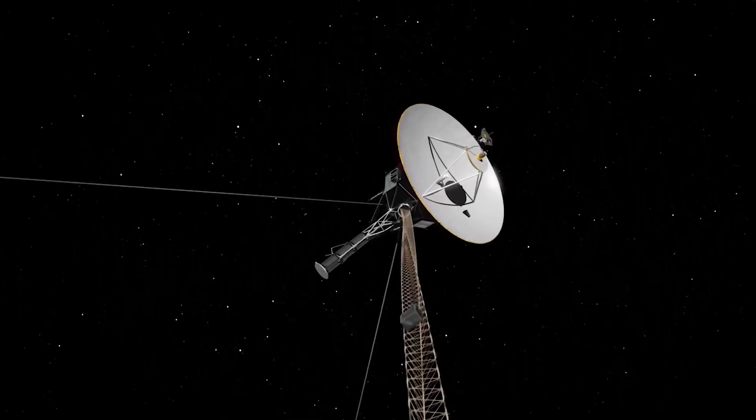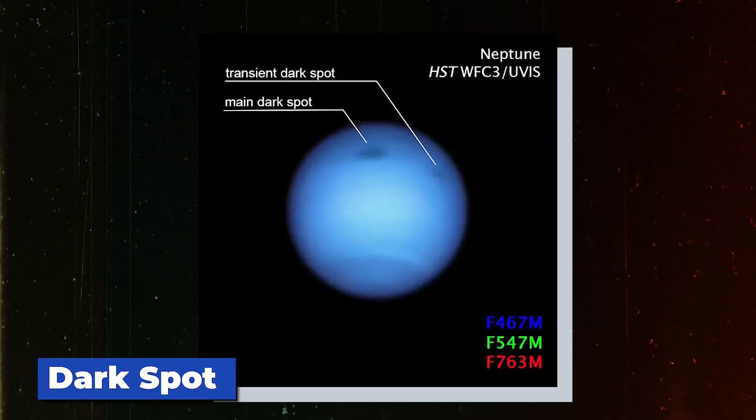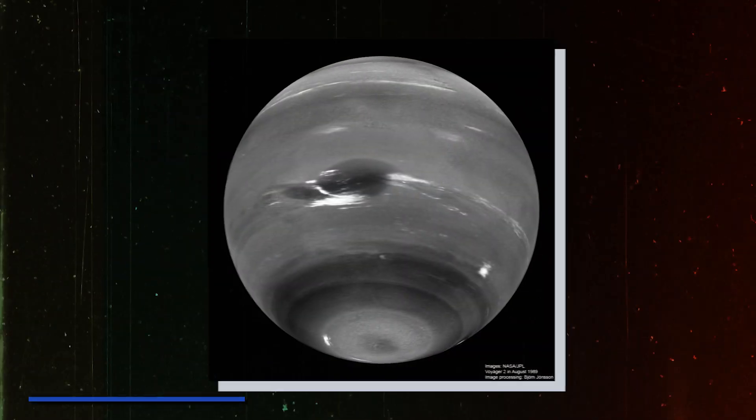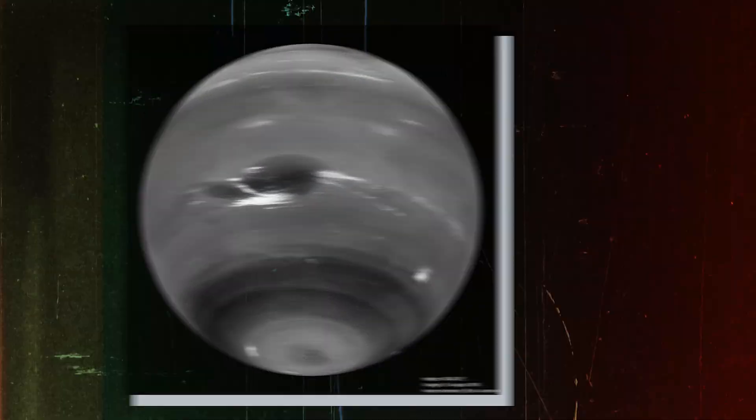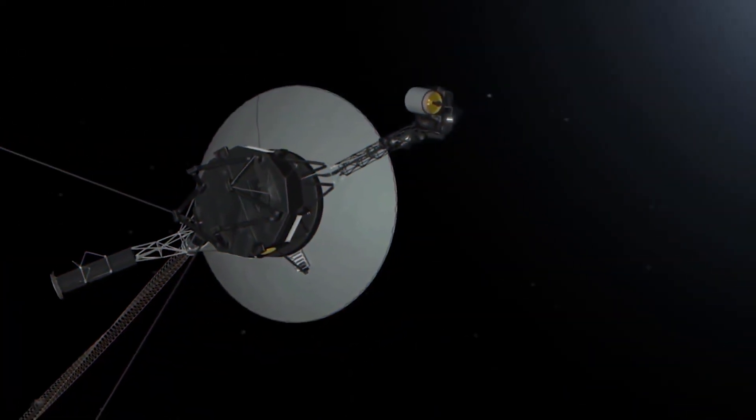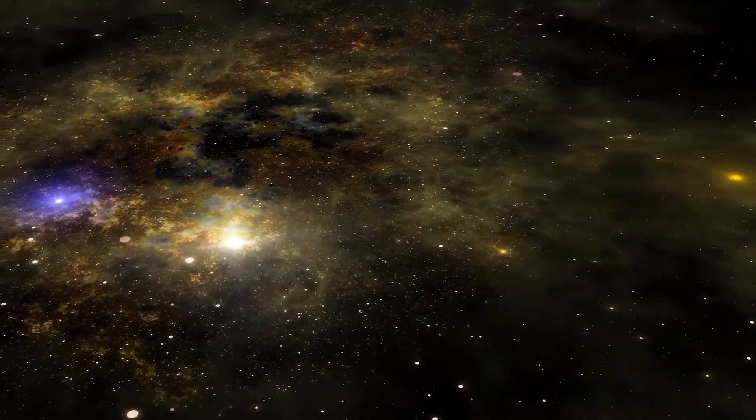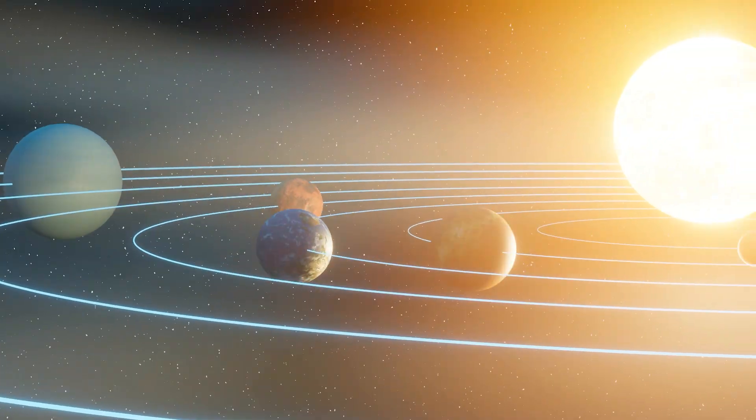One of the most amazing accomplishments of the Voyager mission was the discovery of the Great Dark Spot on Neptune. This enormous storm was larger than the entire Earth and had never been seen before by humans. The Voyager spacecraft also made detailed observations of Jupiter, Saturn, Uranus, and Neptune, providing scientists with valuable insights into the gas giants of our solar system.